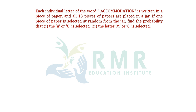The word 'accommodation' has 13 letters, so each letter is split into 13 pieces placed in the jar. One piece is picked at random. We need to find the probability for part one (A or O) and part two (M or C).